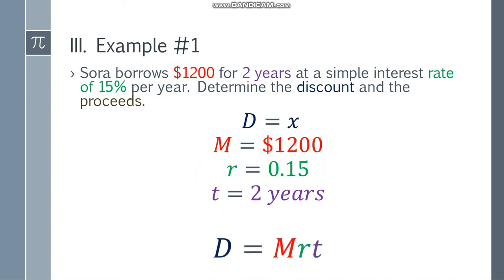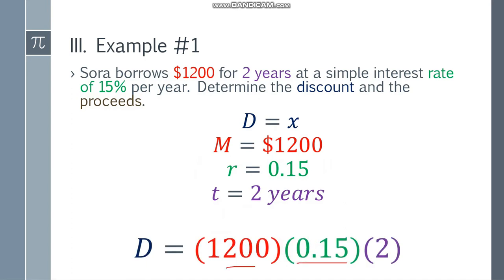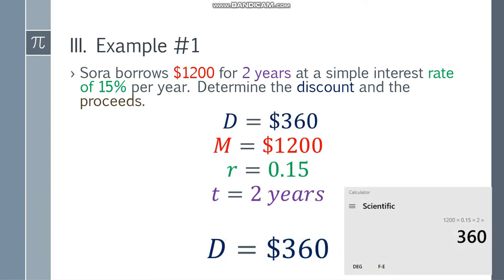D equals MRT. Let's substitute the values: 1,200 multiply by 0.15 multiply by 2. Using the calculator, you will get an answer of $360. That is the discount.